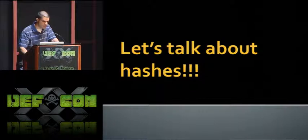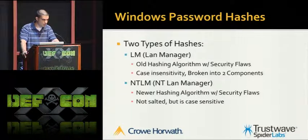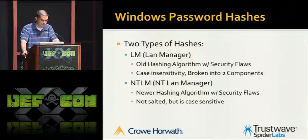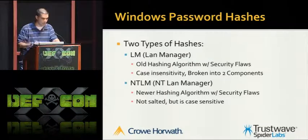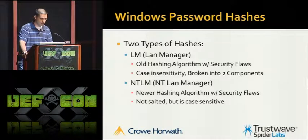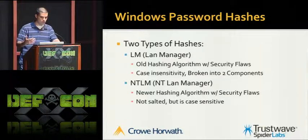Let's level-set on the types of hashes on Windows systems. LM - the LAN Manager hash - is the old type and had tons of security flaws. You couldn't have a password longer than 14 characters, it would uppercase your password, and then split it into two seven-character byte chunks. So if you had an 11-character password, you'd have a hash of the first seven characters and then four characters padded with three nulls - making it really easy to brute force.